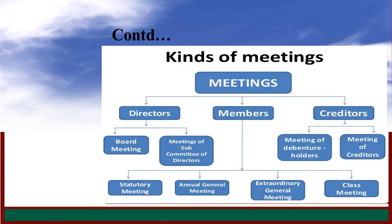Under director-based, there are board meeting and meeting of sub-committee directors. Under the member, there are statutory meeting, advisory meeting, extraordinary meeting, and class meeting. And creditor meetings include meeting of debenture holders and meeting of creditors.